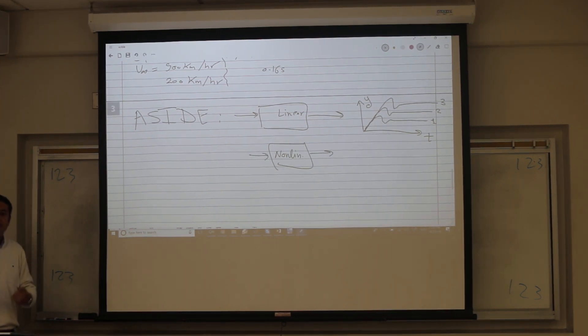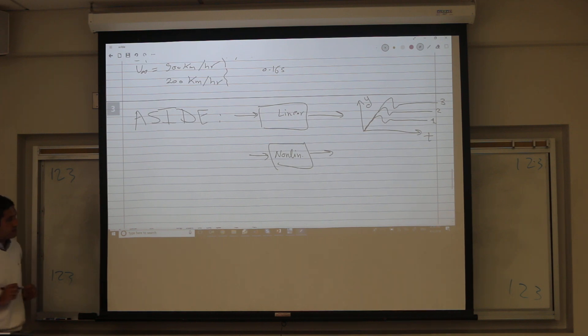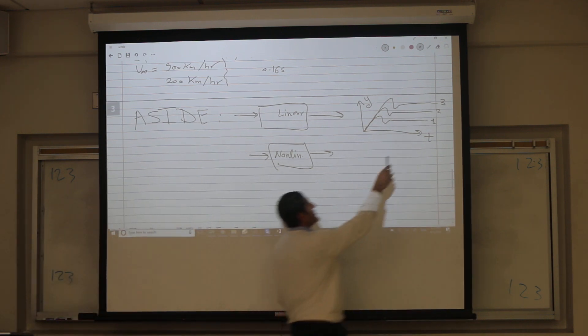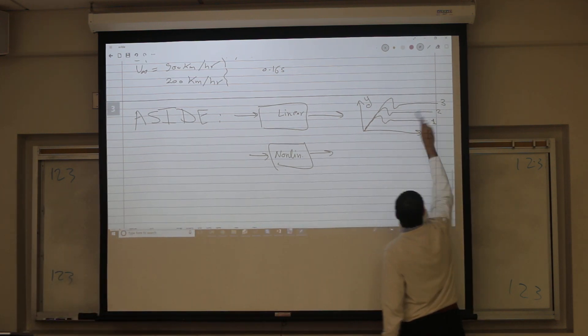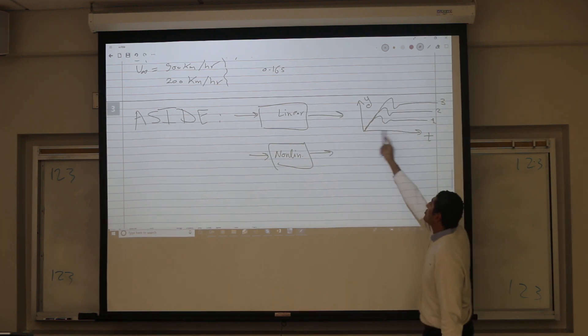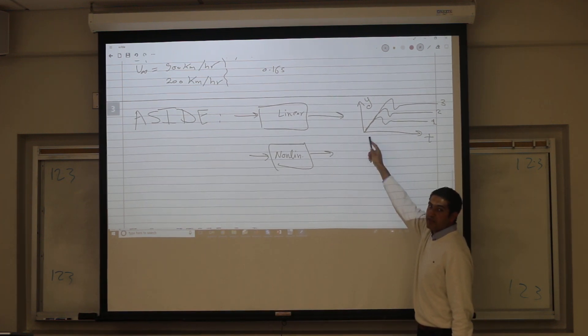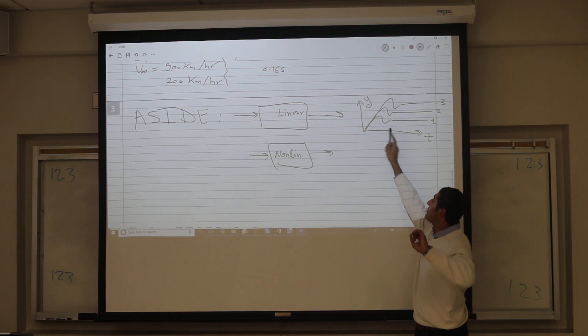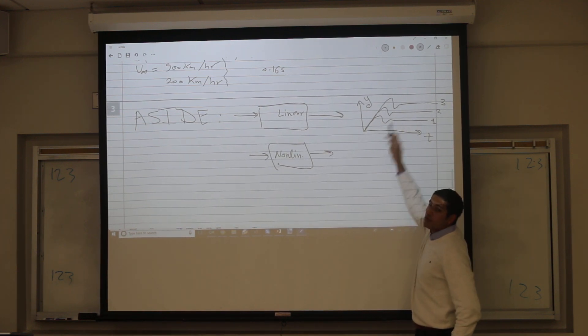The nature of the dynamics depends on the value there. Of course, the steady state value of the output always depends on the value of the output. That's fine. But the nature here is always the same. You have the steady state, you have the same settling time, the same overshoot, same everything.